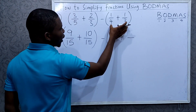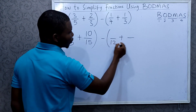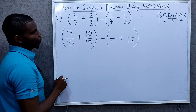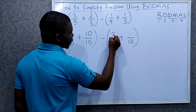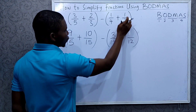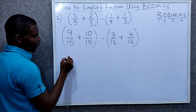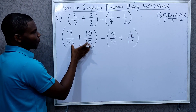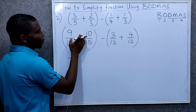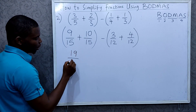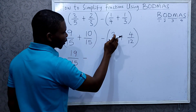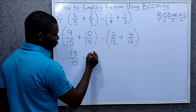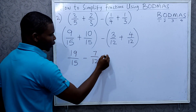The LCM of 4 and 3 is 12. For the numerator: 12 divided by 4 is 3, and 3 times 1 is 3; 12 divided by 3 is 4, and 4 times 1 is 4. When you are adding fractions of the same denominator you simply add the numerators. So this will be 9 plus 10, which is 19 over 15, minus 3 plus 4 which is 7 over 12.